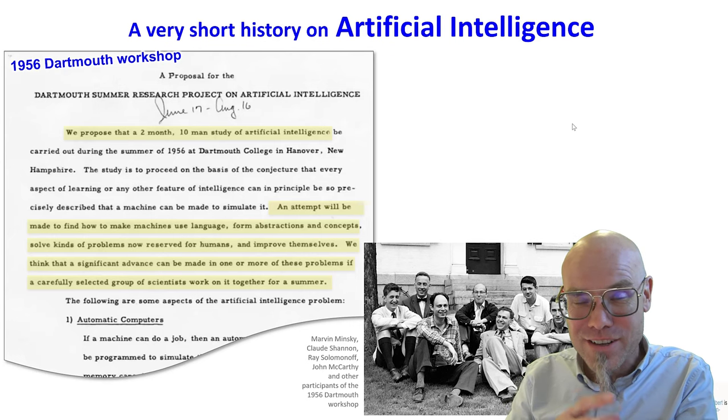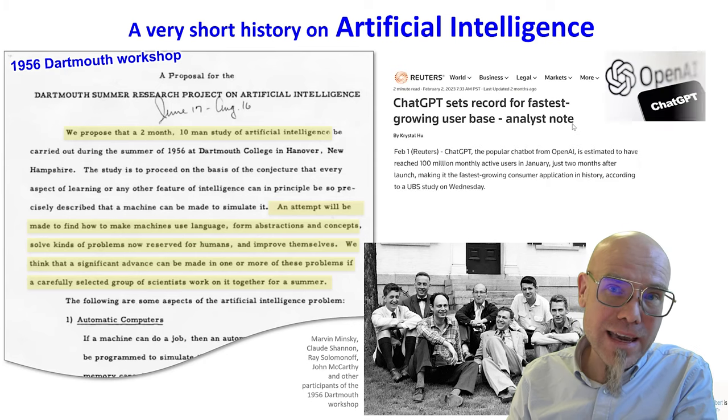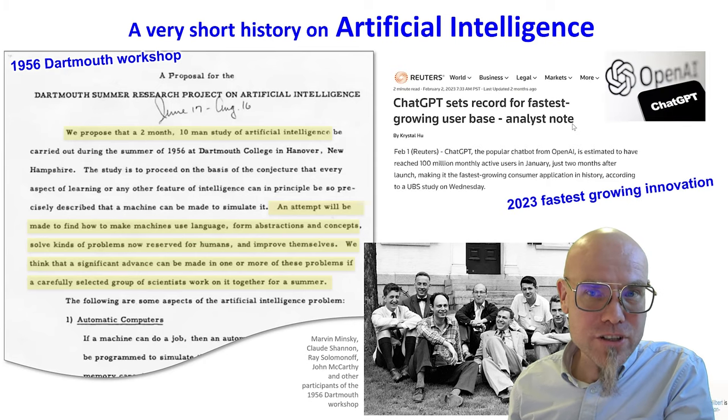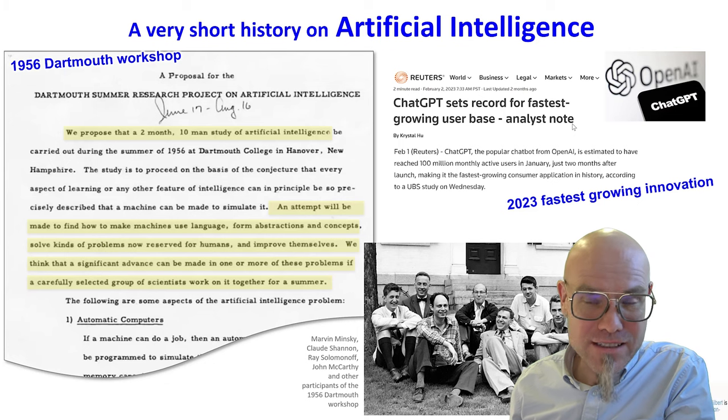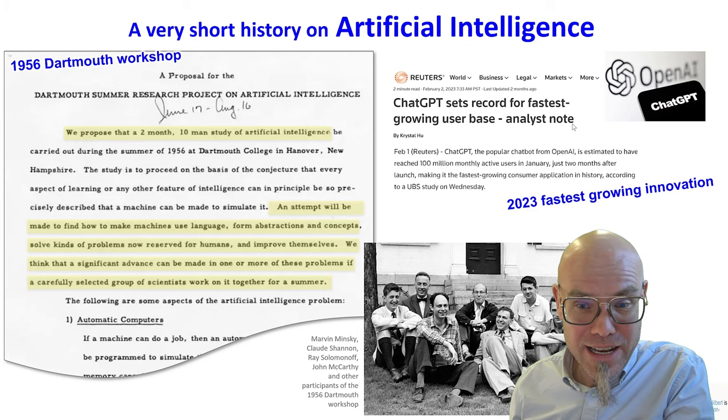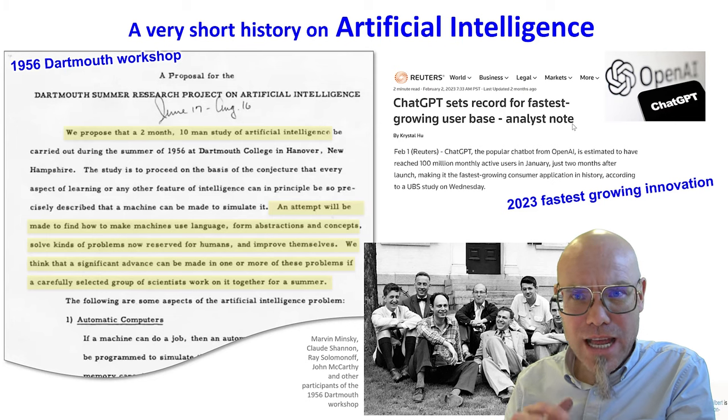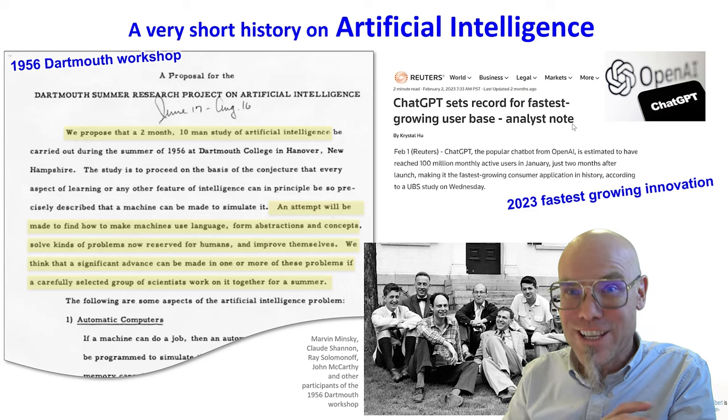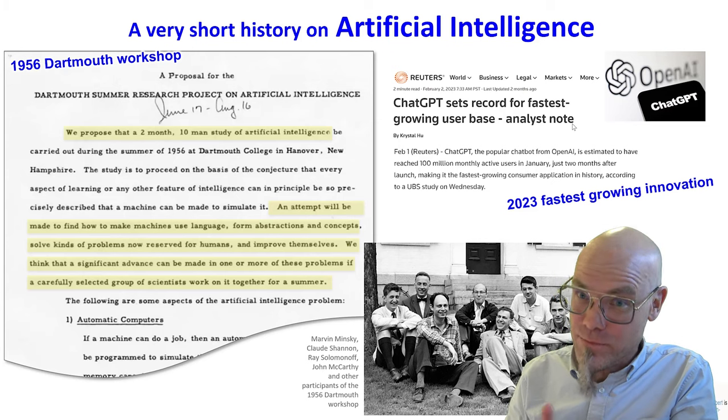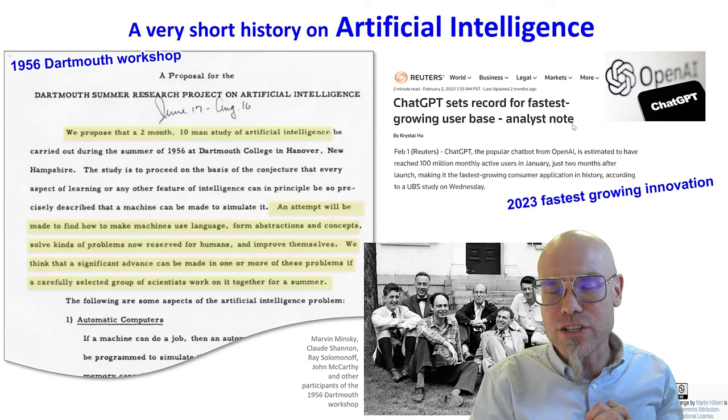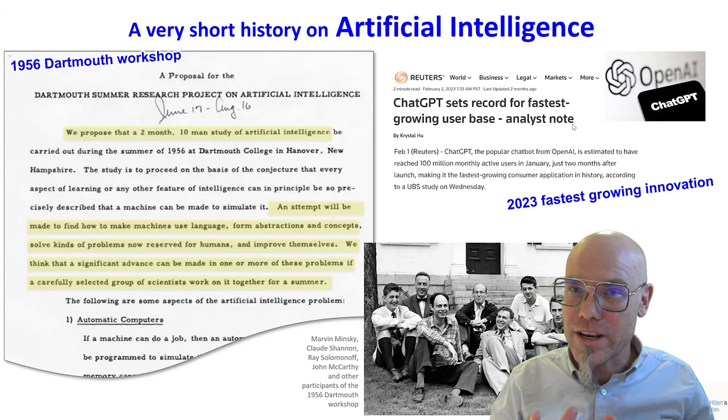More recently, AI came back. The AI winter started to melt away. And more recently, 70 years later, artificial intelligence has become the fastest growing innovation that humankind ever saw. ChatGPT in 2023 reached 100 million users faster than any other technological innovation. It certainly kept its promise. They didn't solve it in a summer, and how did they do it?